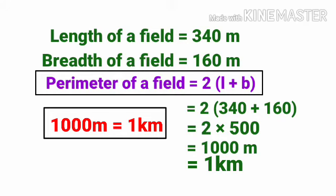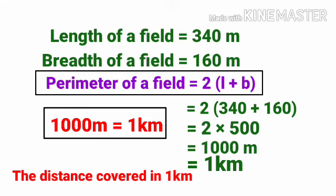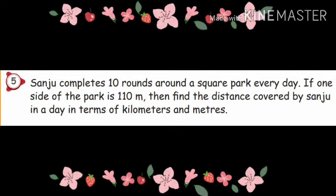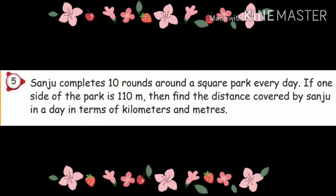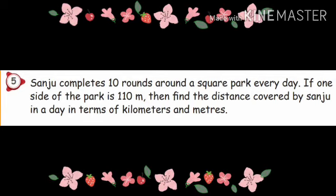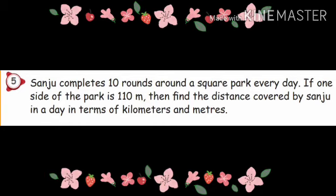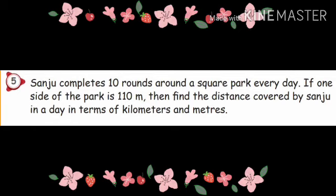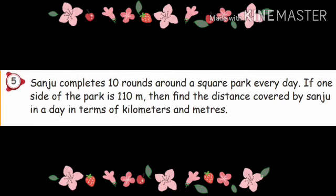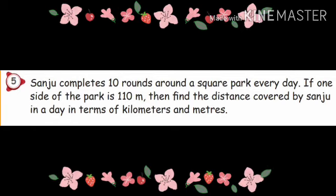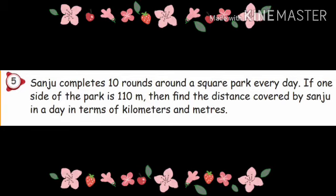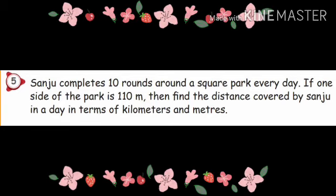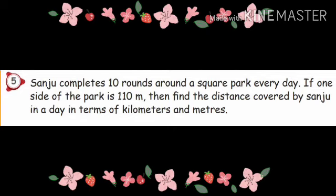Fifth sum: Sanju completes 10 rounds around a square park every day. If one side of the park is 110 meter, then find the distance covered by Sanju in a day in terms of kilometers and meters. Sanju runs 10 rounds around a square park, and one side of the park is 110 meter.